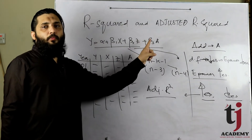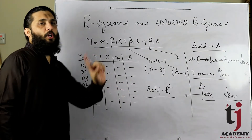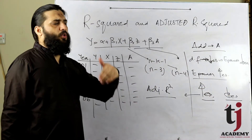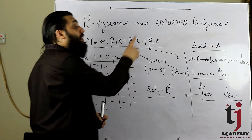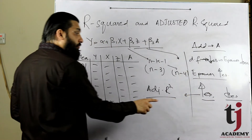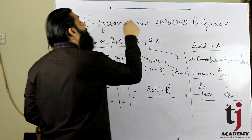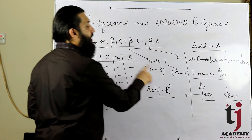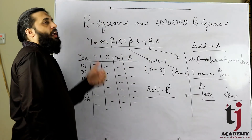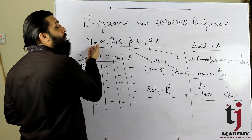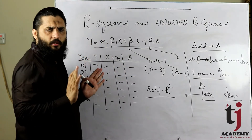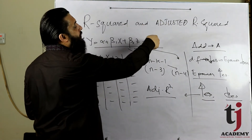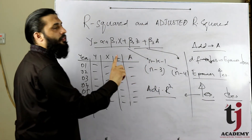Adjusted R² اسی وقت increase ہوگا جب کوئی واقعی relevant variable model میں add ہوگا، otherwise adjusted R² کم ہو جائے گا۔ جبکہ simple R² میں degree of freedom سے کوئی adjustment نہیں ہے — جب بھی variable add کریں، 99% cases میں R² کی value بڑھ جاتی ہے، چاہے وہ variable relevant ہو یا نہیں۔ اس لیے adjusted R² زیادہ بہتر measure ہے: اگر بڑھا تو variable relevant ہے، اگر کم ہوا تو relevant نہیں۔